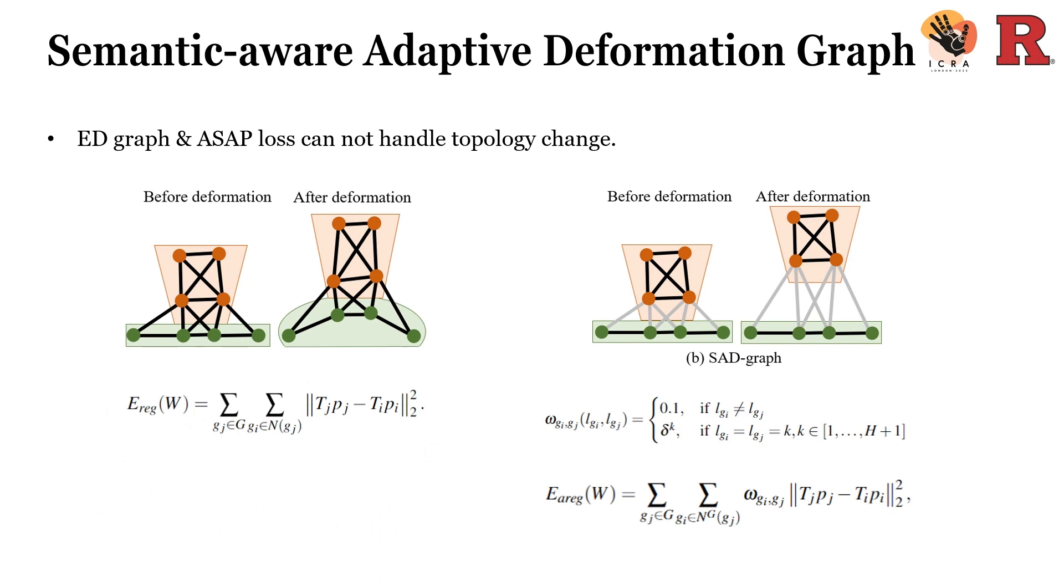The formula is written on the left side. It is trying to make all deformations on different nodes as similar as possible. Thus it is why it is called ASAP loss.